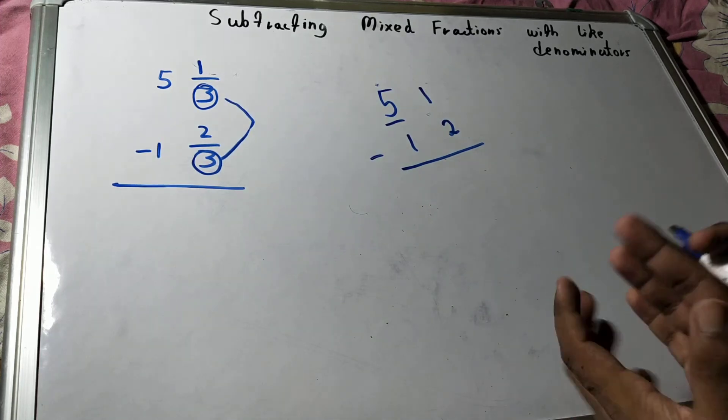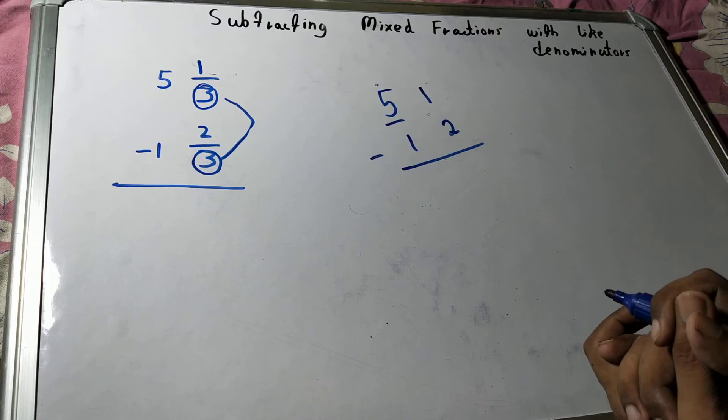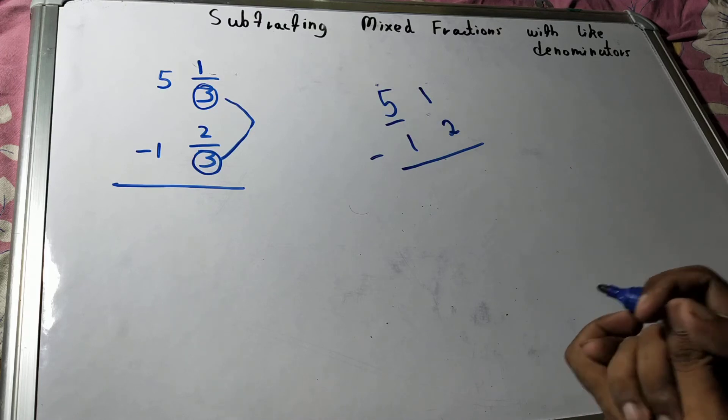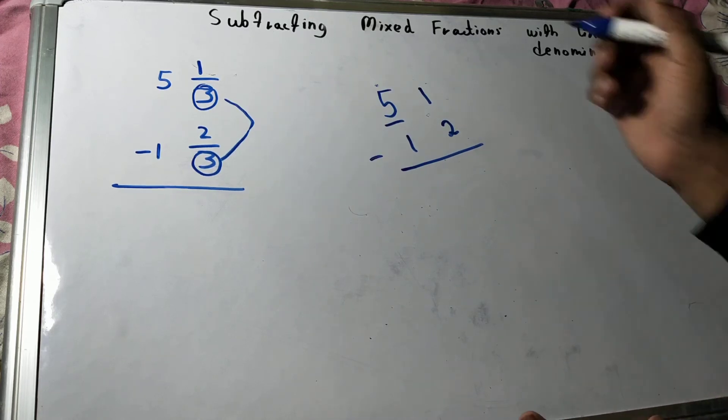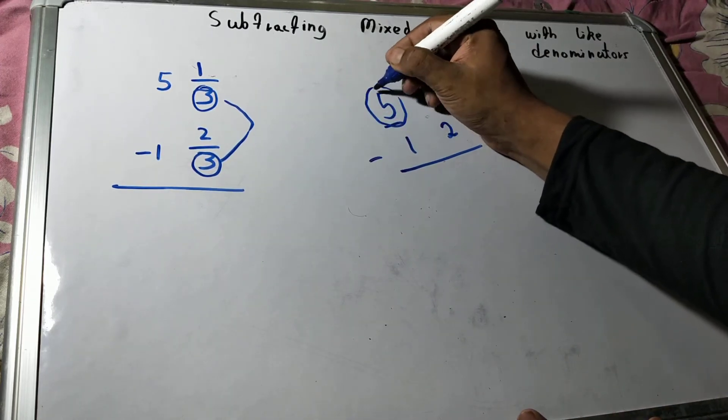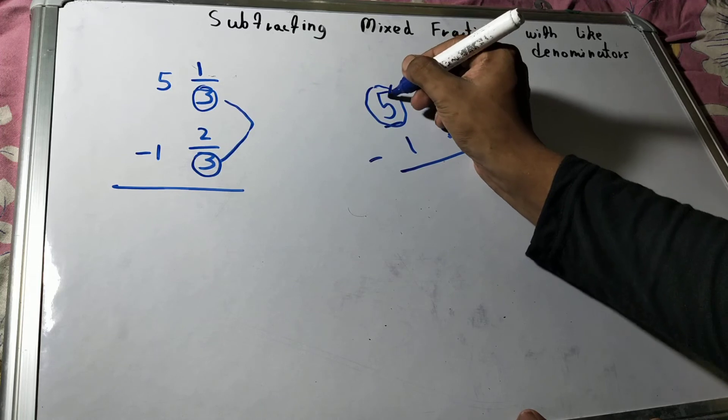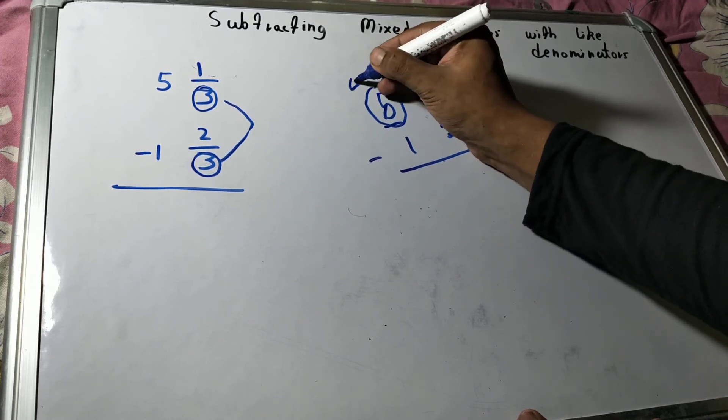So now if you see, you cannot subtract 2 from 1, right? Because 1 is a smaller number. So you have to take a borrow from the next number, that is 5. So if I take a borrow from 5, this 5 will become 4.